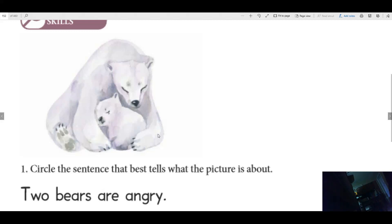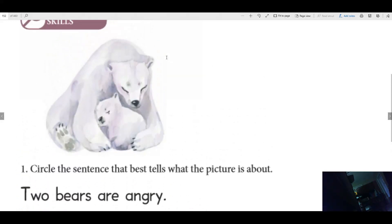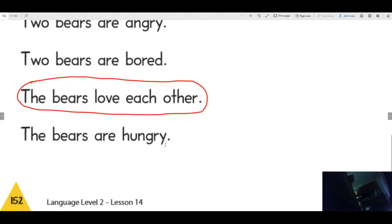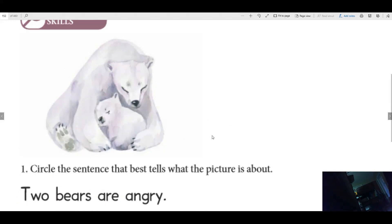What are those polar bears aren't they? A mama and her baby maybe? Read what this says. The instructions. Read it out loud. Can you do that? Did you circle this one? Because if you did, that means you got it right. Because it said, circle the sentence that best tells what the picture is about. And this says the two bears are angry, but they don't look angry. Two bears are bored. They don't really look bored. Or the bears are hungry. It doesn't look like they're hungry. How about the bears love each other? That's what that sentence talks about. That's exactly right.